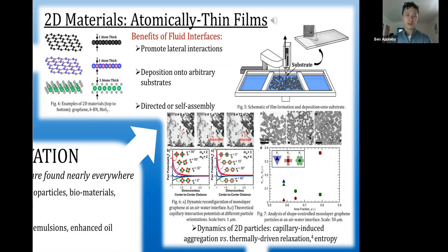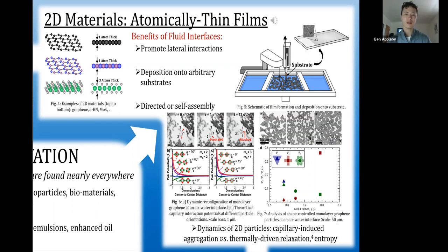They are also of interest to our group because of their platelet-like structure where their lateral dimensions are much greater than their atomic scale thicknesses. We are interested in putting these particles at flat fluid-fluid interfaces as shown in figure 5, because fluid interfaces can irreversibly trap particles and confine them to interact only in two dimensions, which promotes lateral interactions and the formation of thin films with homogeneous thicknesses. We can then deposit films created at fluid-fluid interfaces onto arbitrary substrates such as glass or flexible polymers, which could be used in next generation devices. However, in order to create reproducible films, we first have to understand the forces that give rise to directed or self-assembly of these particles into specific film structures at a fluid interface.